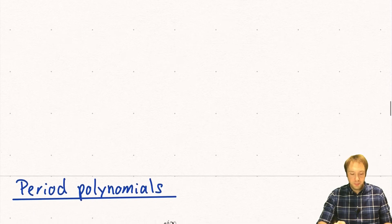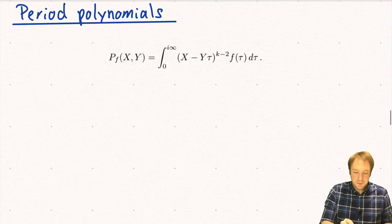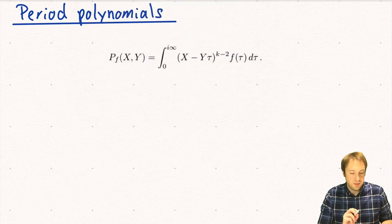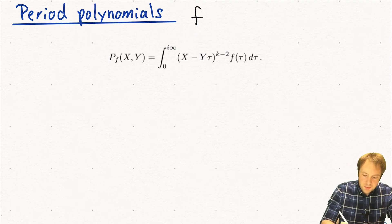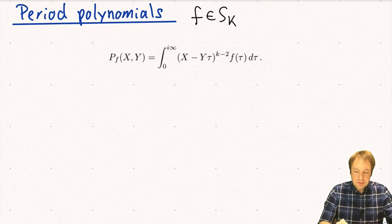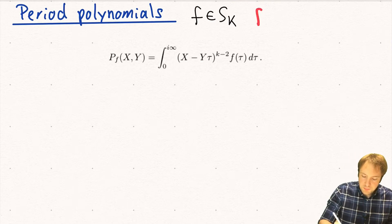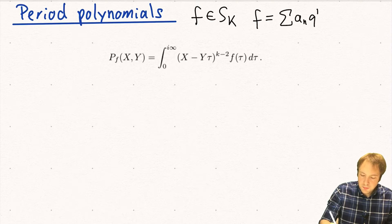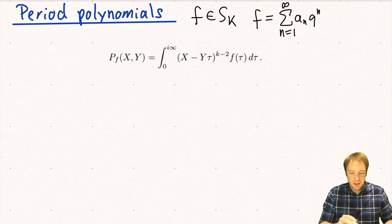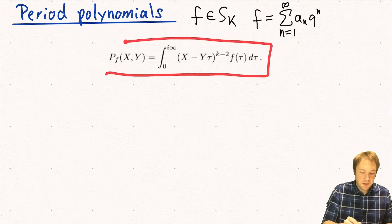So what are period polynomials? They are polynomials assigned to modular forms, but here we need to make a restriction: we don't consider all modular forms, we will just consider cusp forms. So let f be a cusp form of weight k. Recall this means that f can be written as some q-series which starts at 1 here, so the constant term in this q-series vanishes. For such a cusp form, we can define an element called the period polynomial of this cusp form f, which will be a polynomial in two variables x and y.